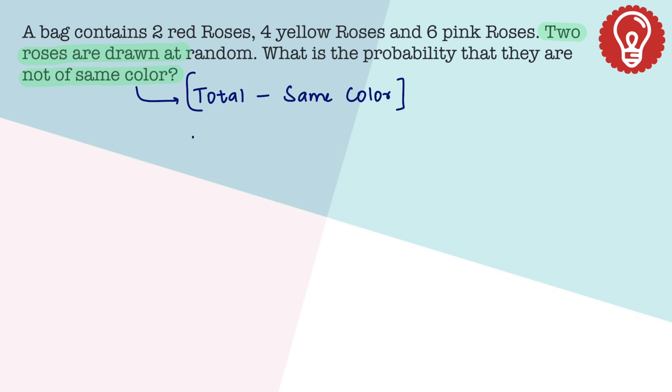So the total probability is 1 and if they have to be of the same color, I pick two roses. There are two red roses and we pick two out of them, or four yellow roses and we select two out of them, or out of six pink, we select two out of them. Out of an overall sample space of 12, we select two.